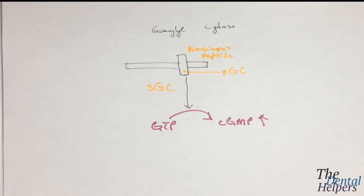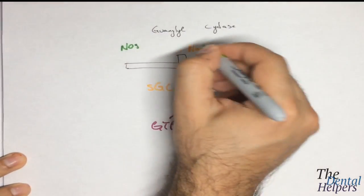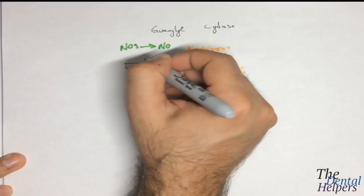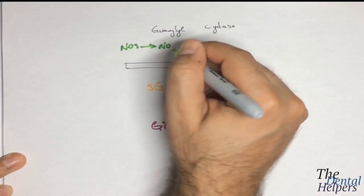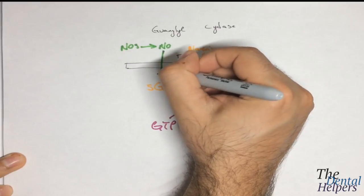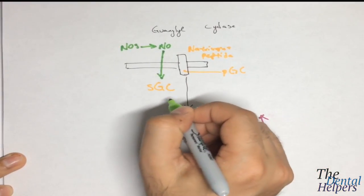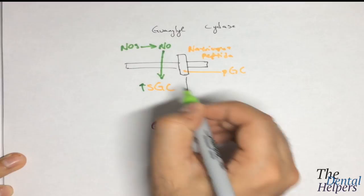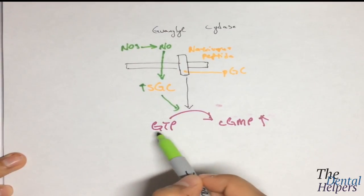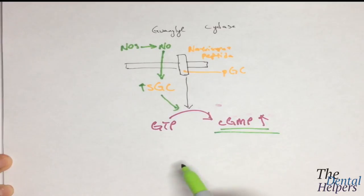Now, the other route we can take is actually the soluble route, where we start with NOS. NOS is nitric oxide synthetase, and it's converted into nitric oxide, which is soluble through the plasma membrane. And now we have an increase in soluble guanyl cyclase, which leads back into the conversion of GTP into cGMP, which increases our cGMP as well.